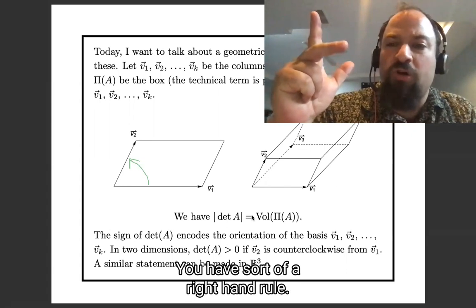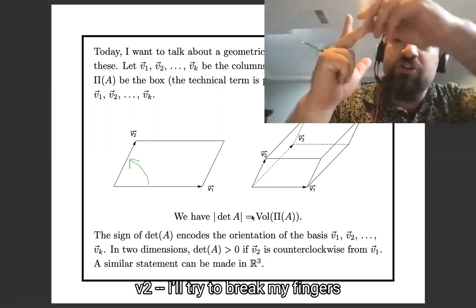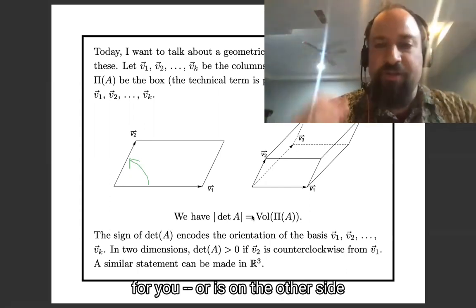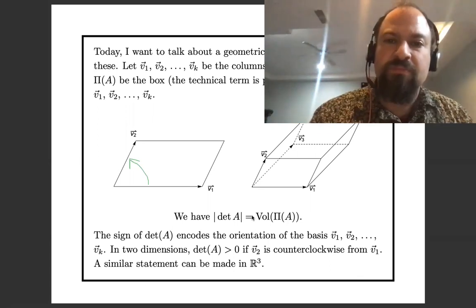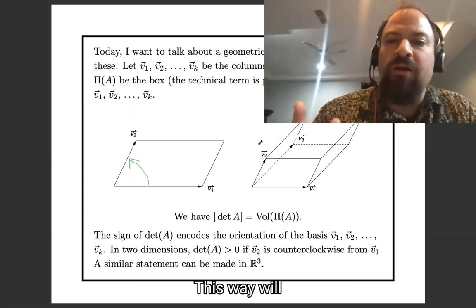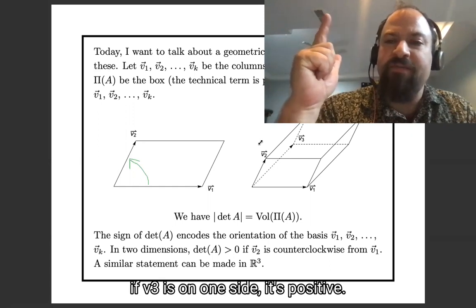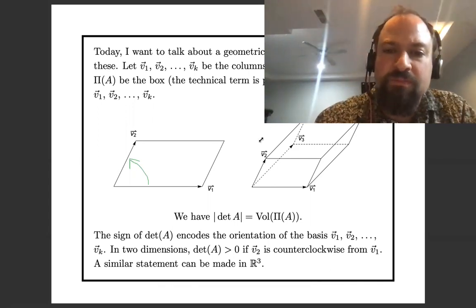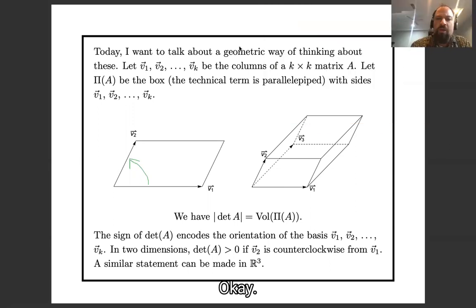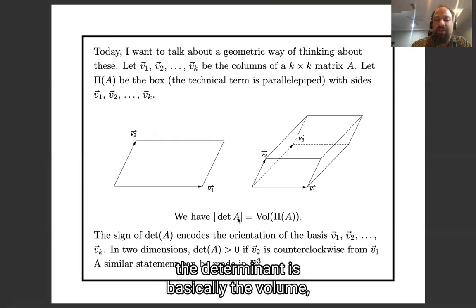In three dimensions there is a right-hand rule. You have vector v1 and vector v2, and the question is whether v3 is on one side of the plane spanned by v1 and v2 or the other. If it's on the right-hand side, the determinant is positive; if it's in the other direction, it's negative. I'm mostly not going to focus on signs today — I mostly want you to remember that the determinant is basically the volume, but there is a sign, and that's the rule for it.